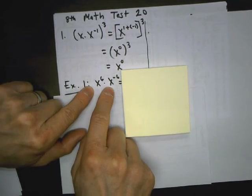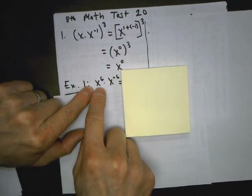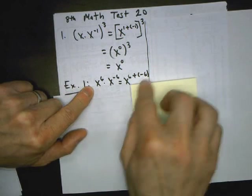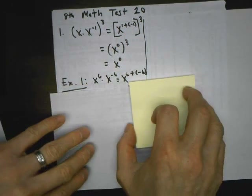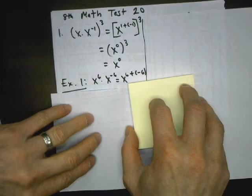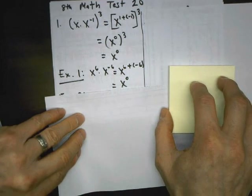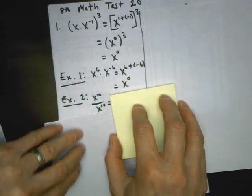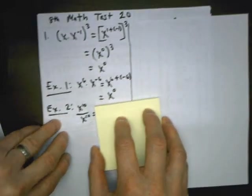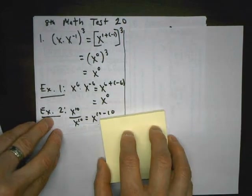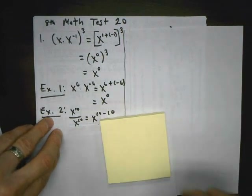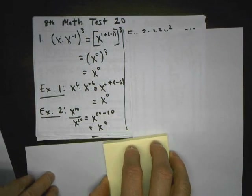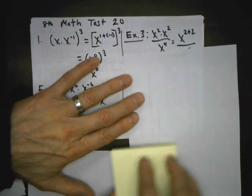When it's written like this — when I've got power times a power with the same base — I copy the base and add the two exponents. That's a shortcut for multiplying these, and 6 plus negative 6 is 0. Expression 2: this is where I'm dividing powers with the same base, so I copy the base and subtract the exponents — top minus bottom — and I get 6 to the 0.